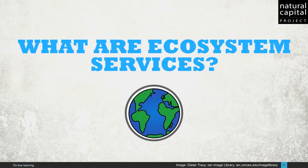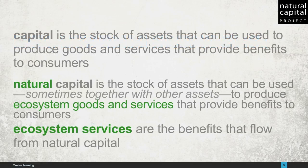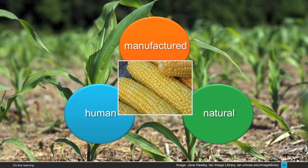So, that's natural capital. What are ecosystem services? Ecosystem services, quite simply, are the benefits people obtain from ecosystems — a definition provided by the Millennium Ecosystem Assessment. Natural capital is the stock of assets that can be used, sometimes together with other assets, to produce ecosystem services that provide benefits to consumers. So, ecosystem services are the benefits that flow from natural capital. Going back to the farming example, various forms of capital combine to produce corn, and because natural capital played a key role, we consider the production of corn to be an ecosystem service.